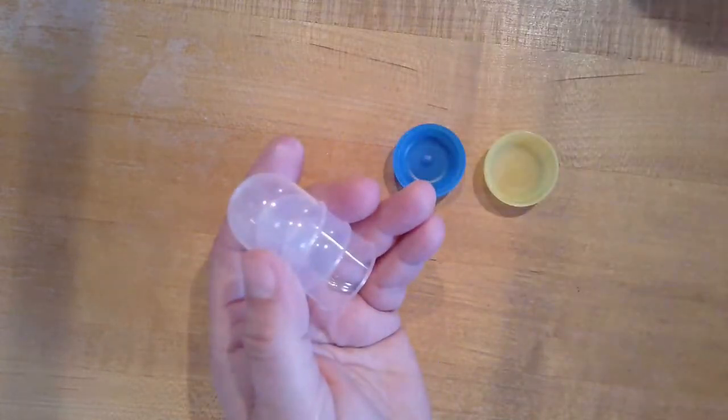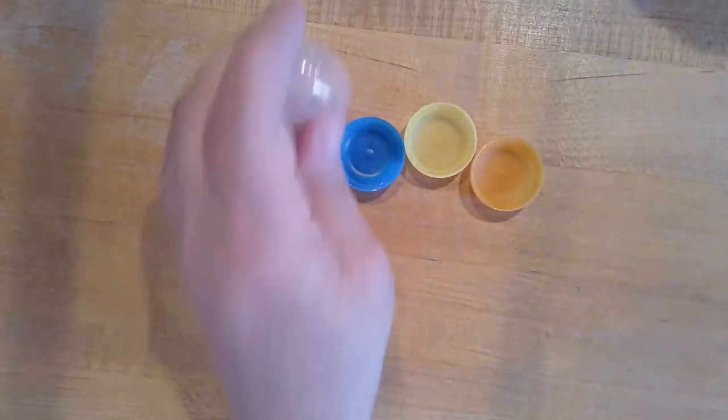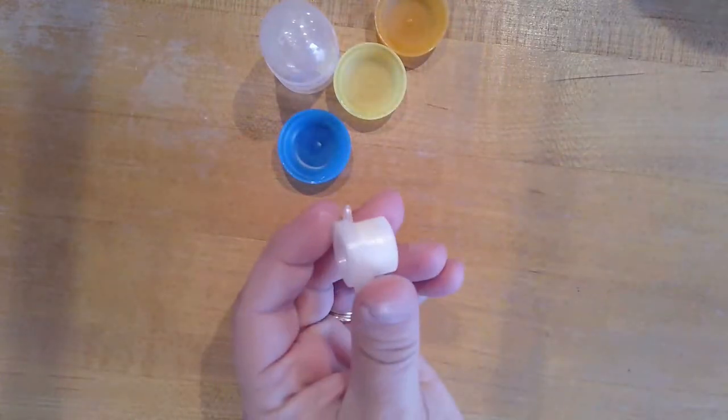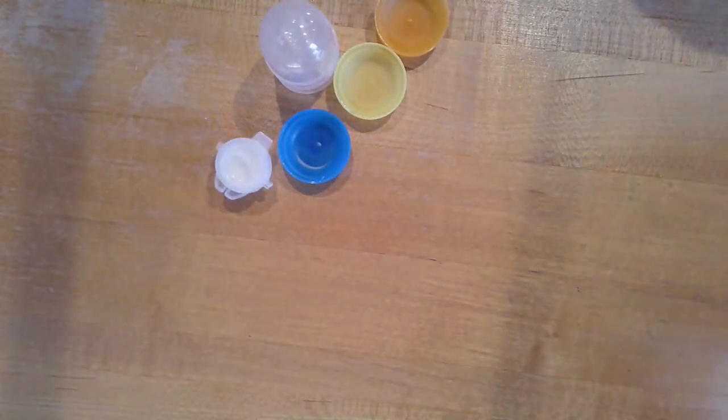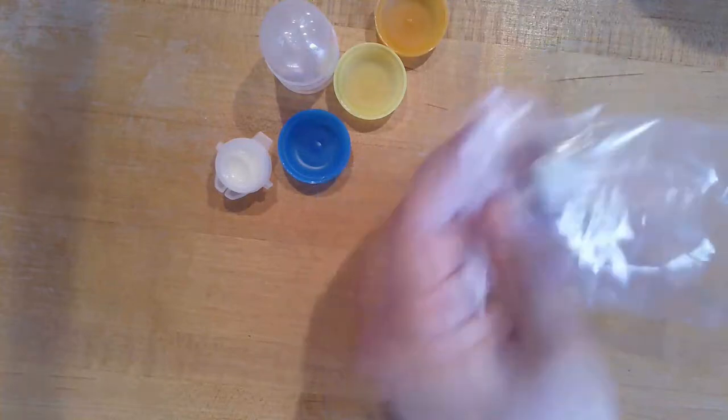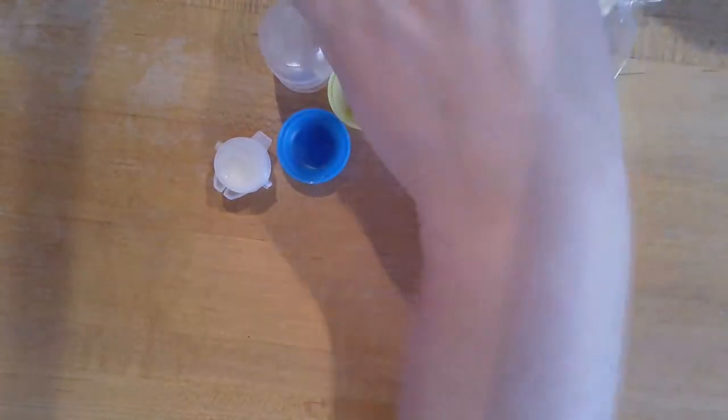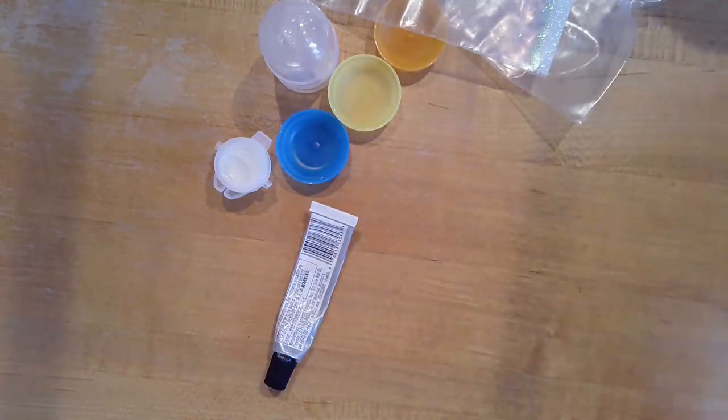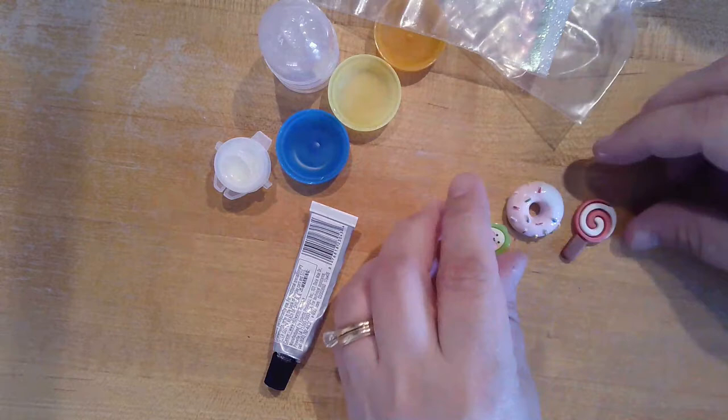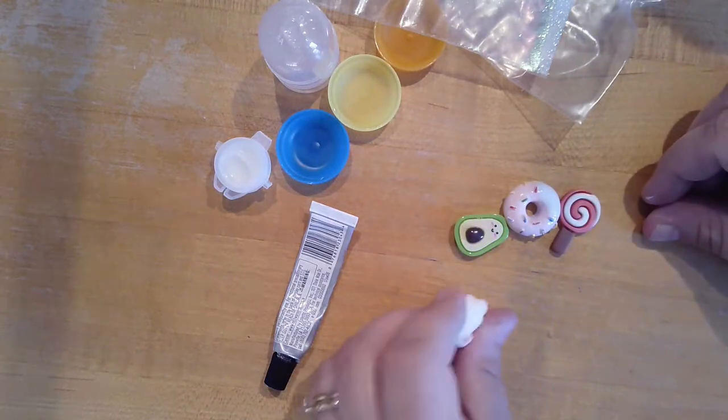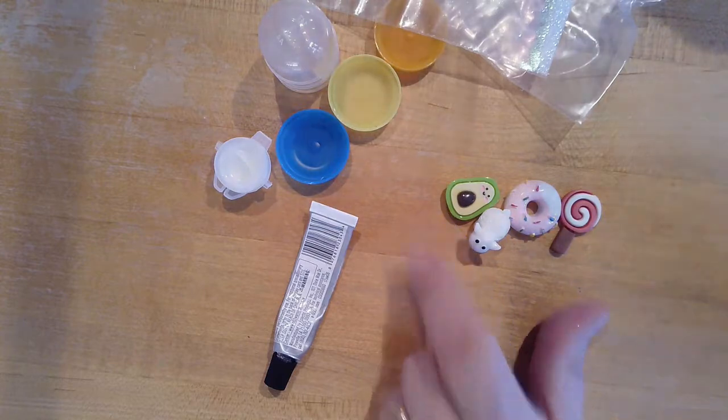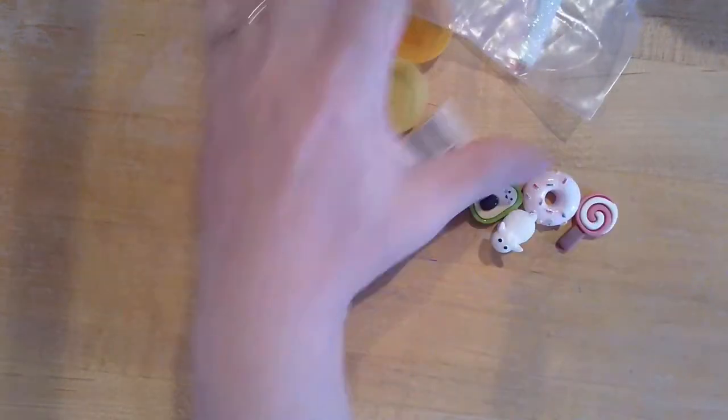In your kit you'll find three gumball containers, different color bases, a pot of glycerin, a bag of Sculpey Clay, a bag of glitter, some glue. This is strong craft glue, and some slime charms. These slime charms will be different depending on your kit. You should have three in each.